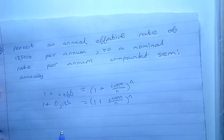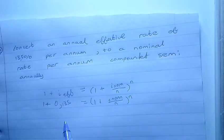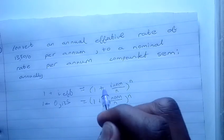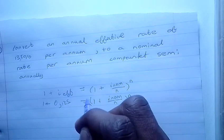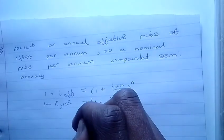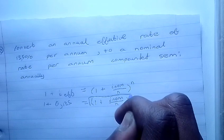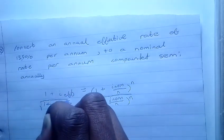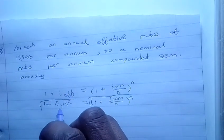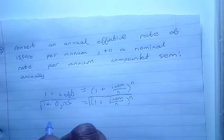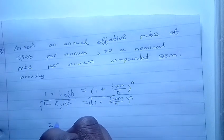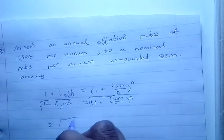In order to solve for the nominal rate, we're gonna square root both sides to get rid of the n and the brackets.